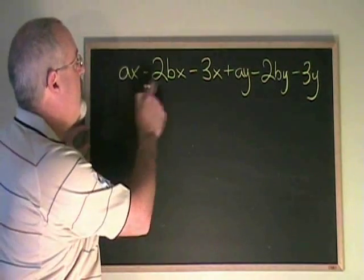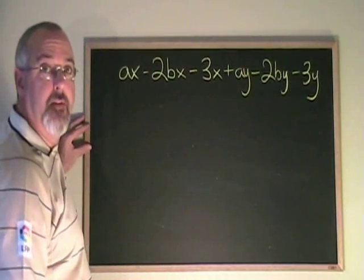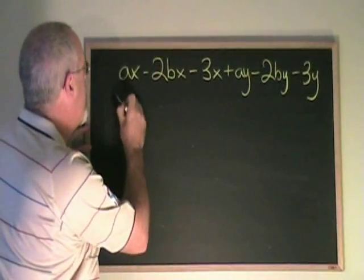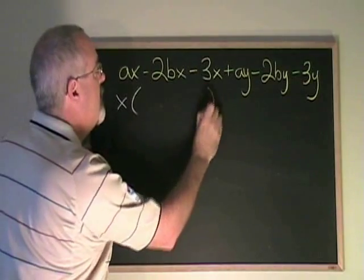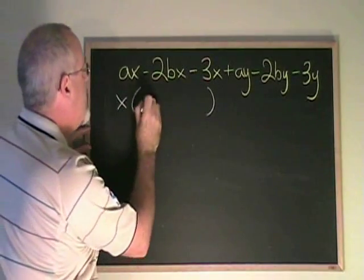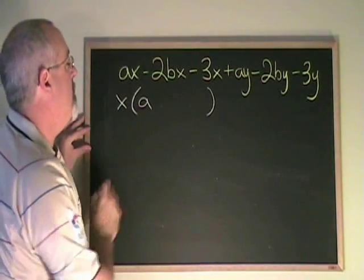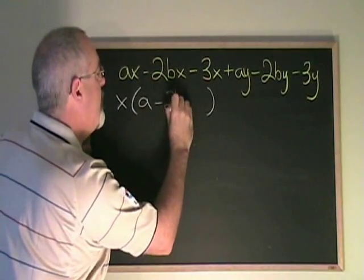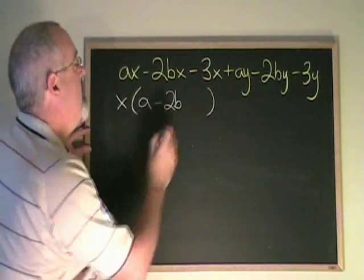If I look at the first three terms, I can see they have a common factor of x. So I'm going to have 2x divided by x is a minus 2b, minus 3x divided by x is minus 3.